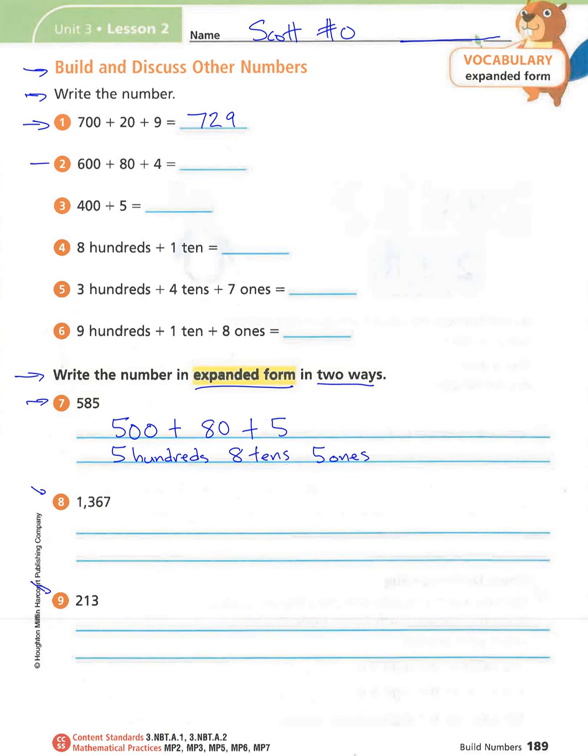Alright, so let's start off on number 2 here. I see 684. So as I say that, I know 684, I can just write those numbers.